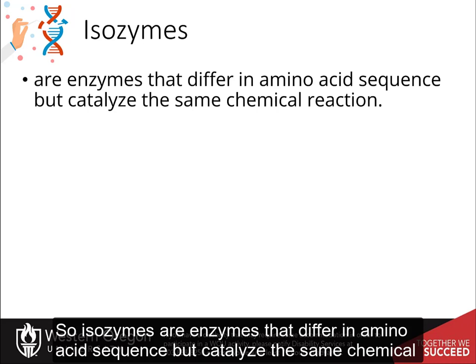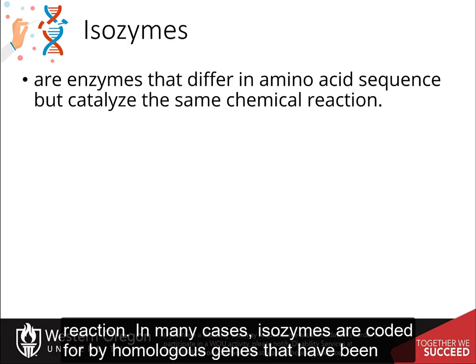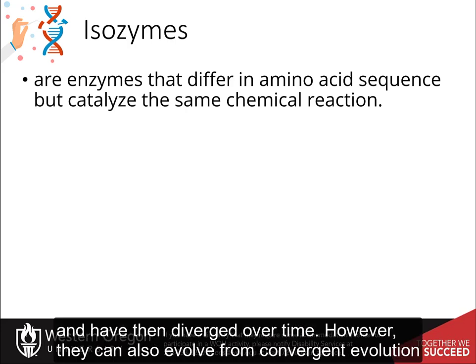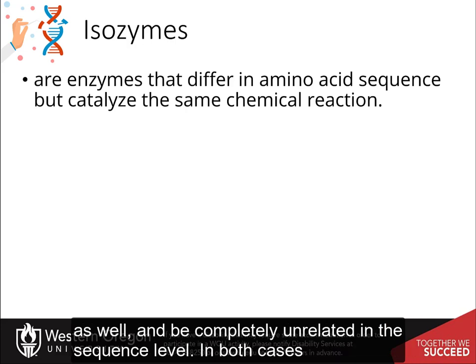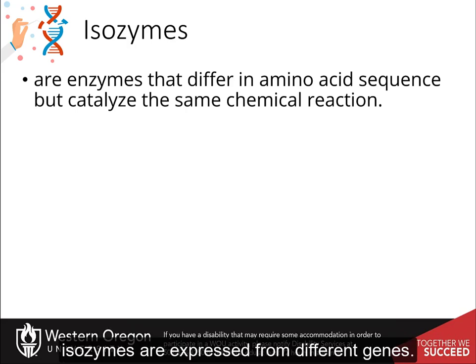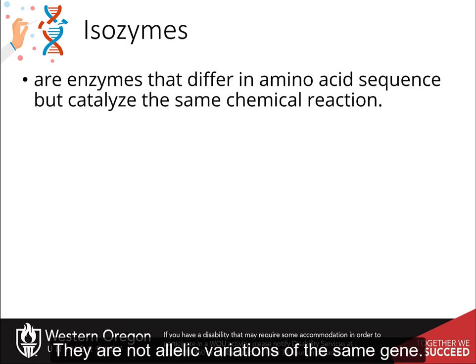Isozymes are enzymes that differ in amino acid sequence but catalyze the same chemical reaction. In many cases, isozymes are coded for by homologous genes that have been duplicated within the genome and have then diverged over time. However, they can also evolve from convergent evolution and be completely unrelated at the sequence level. In both cases, isozymes are expressed from different genes — they are not allelic variations of the same gene.